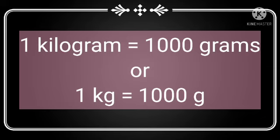Children, study this. 1 kg is equal to 1000 grams. Or in short way, 1 kg is equal to 1000 g. That is 1 kg is equal to 1000 grams.